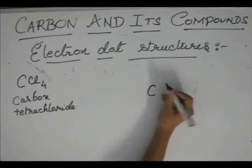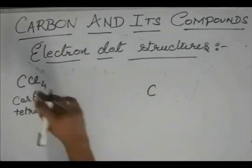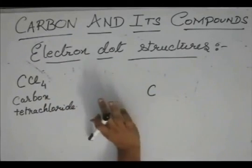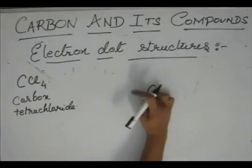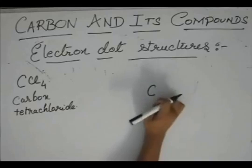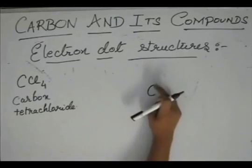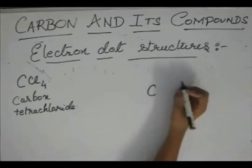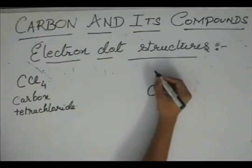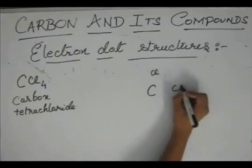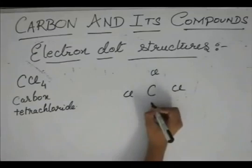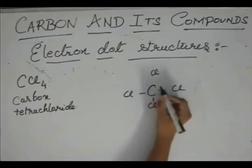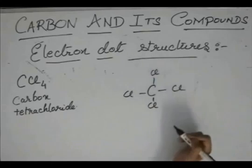So, we have a carbon and we have 4 chlorines. What can you understand? Carbon has 4 valencies. So, each chlorine must contribute to 1 valency. So, each of the chlorines should make 1 bond with carbon.